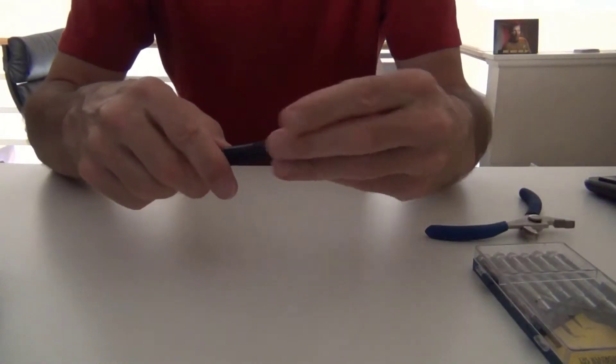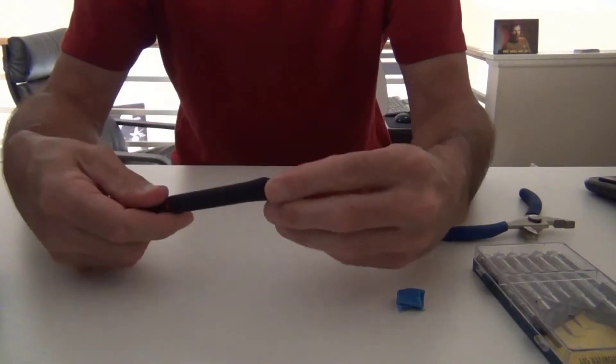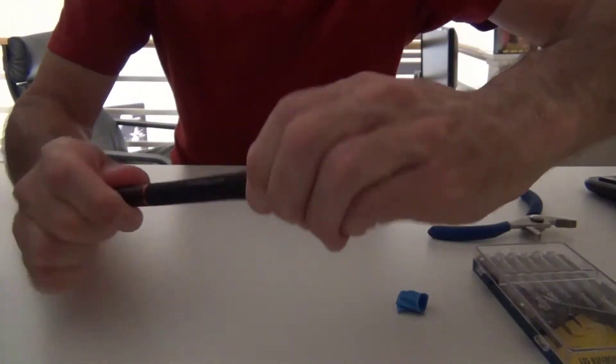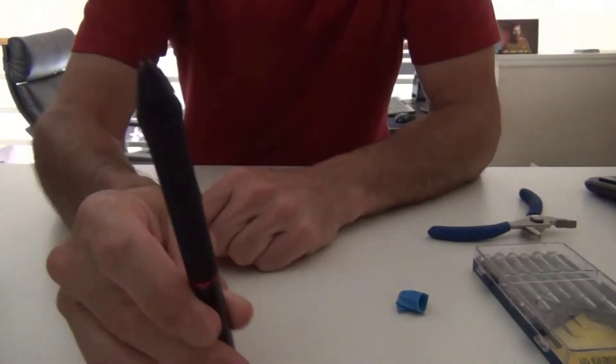So the first thing is to unscrew the nib housing. It's on there pretty tight, so I used some tape to protect it from my pliers.